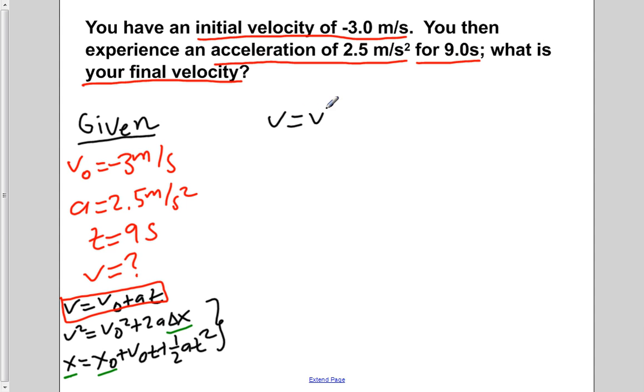So now we're going to rewrite our equation that we're going to use, which is v equals v naught plus a t. We're now going to simply plug in the values of each of our givens into the equation. So v naught is negative 3 meters per second. Our acceleration is 2.5 meters per second squared. And our time is 9 seconds.